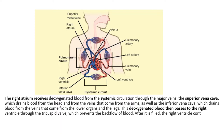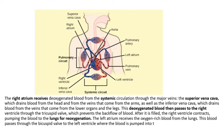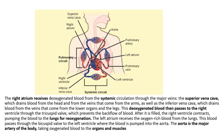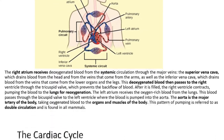After it is filled, the right ventricle contracts, pumping the blood to the lungs for reoxygenation. The left atrium receives the oxygen-rich blood from the lungs. This blood passes through the bicuspid valve to the left ventricle, where the blood is pumped into the aorta. The aorta is the major artery of the body, taking oxygenated blood to the organs and muscles of the body. This pattern of pumping is referred to as double circulation, and is found in all mammals.